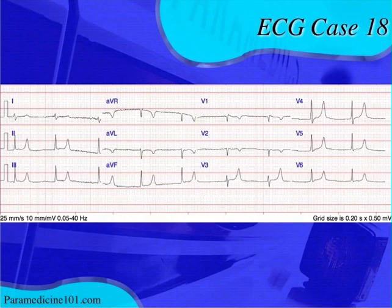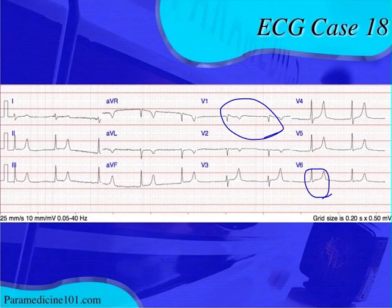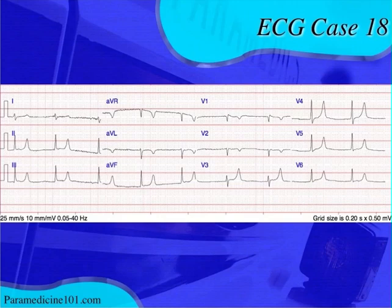Looking at the precordial leads, you should see a mostly negative QRS in V1 transitioning to a mostly positive QRS in V6. That does happen here — V2 is mostly negative, V4 is mostly positive — so there is a normal precordial transition. Moving along to intervals: the QRS is narrow. The QT interval may look prolonged, but it's a slower rhythm. If you correct it with Bazett's formula, or look at the QTc on the 12-lead printout, you'd see it's a normal QT interval. The PR interval — we already talked about it — it's a junctional rhythm.